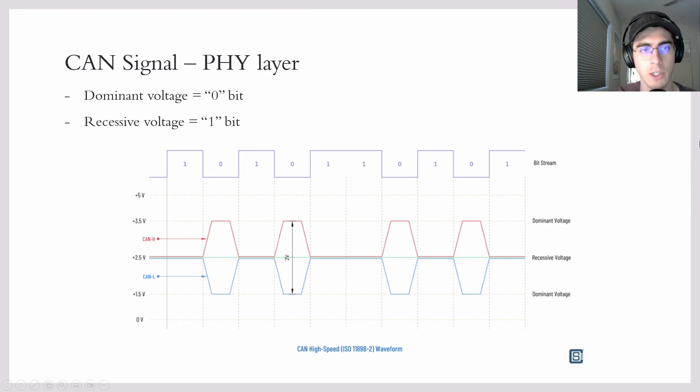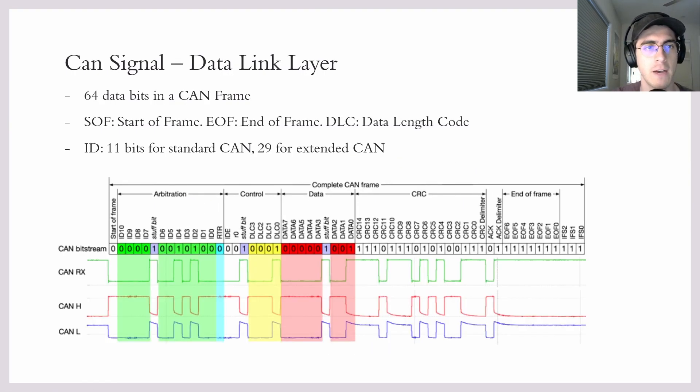And that's pretty much it. So moving on, we have the data link layer of the protocol. So one step above physical. Now, the data link layer is concerned with what data is actually sent over these lines.